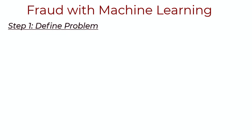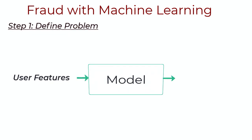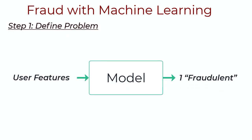The first step is defining the problem. Let's take the idea of fraud detection and define a concrete problem. We want to be able to catch bad actors when transactions are made. So the input is some features about the user and their account, and the output would be a binary classification of fraudulent or not fraudulent. Now we need to build the dataset in this way too.